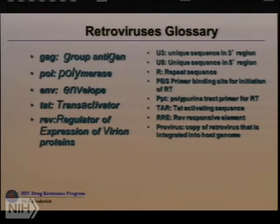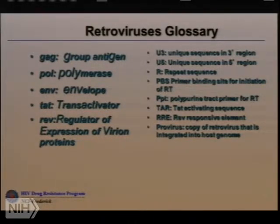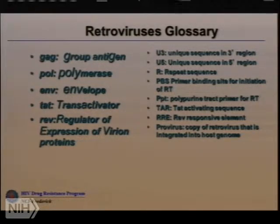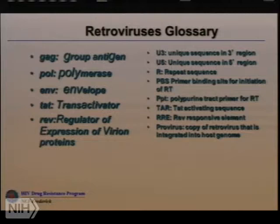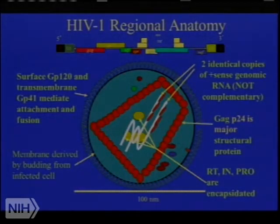Here's a glossary of how these things get their names: RT makes sense — reverse transcriptase, part of the pol gene for polymerase. Env makes sense for envelope. Tat is a transactivator. Rev is a regulator of expression of virion proteins. And GAG — group antigen — before nucleic acid sequencing, was used as the serologic marker that distinguished these viruses. The virus is an envelope virus that acquires its envelope as it buds out of the cell surface, has a core consisting of p24, and carries two copies of RNA and its enzymes.